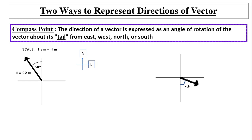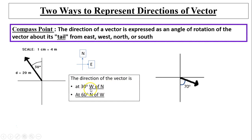There are two ways to represent the direction of a vector. The first is called the compass point method. Compass gives us directions: north, east, south, or west. The direction of a vector is expressed as the angle of rotation about its tail from east, west, north, or south. For example, this vector is between west and north. Its direction is 30 degrees west of north — meaning from north, you turn 30 degrees toward the west. If this angle is 30 degrees, the other must be 60 degrees, since the whole angle is 90 degrees.